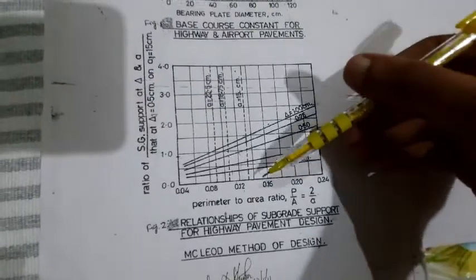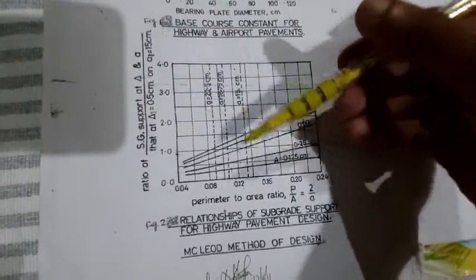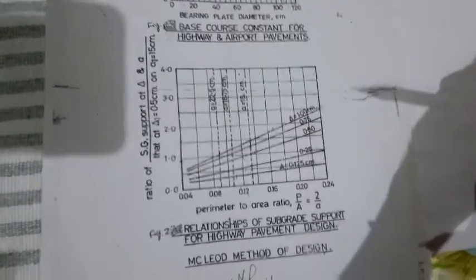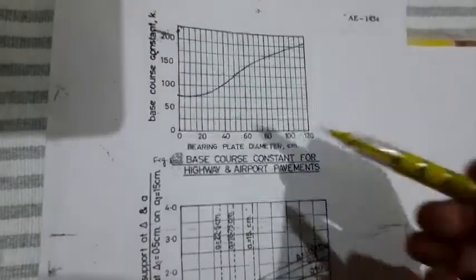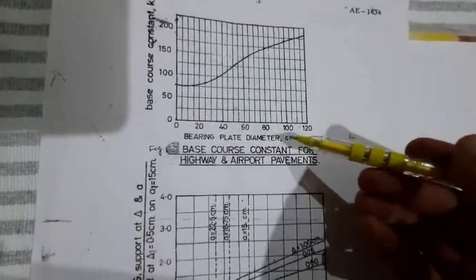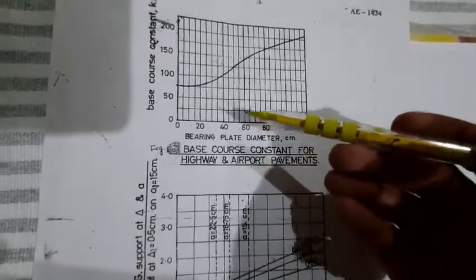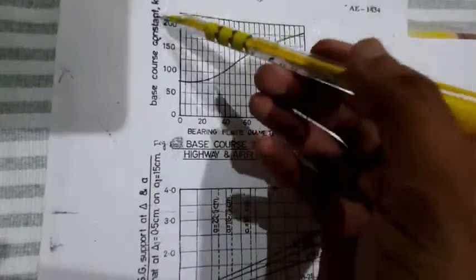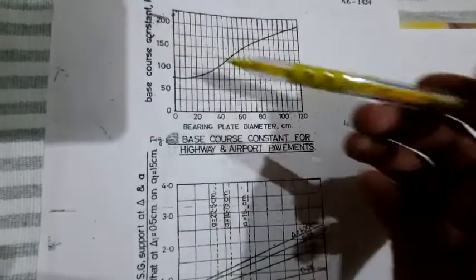According to that, we are going to see the different P by A ratios. And here you have the bearing plate diameter, whatever the bearing plate diameter for that, what the base course constant K is supposed to be. The K from the formula, you are going to get from this graph.